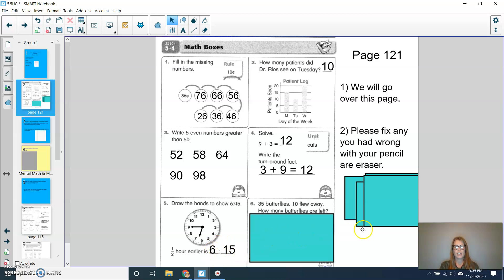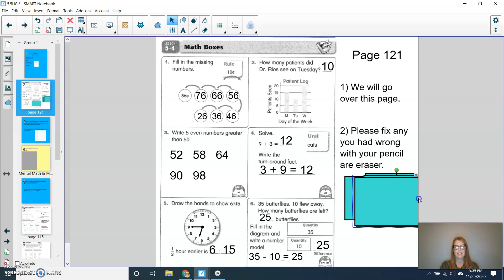For question six, there's 35 butterflies, 10 flew away. How many butterflies are left? And so 35 minus 10 equals 25. So double check that to make sure you have this page correct before moving on to our next slide.